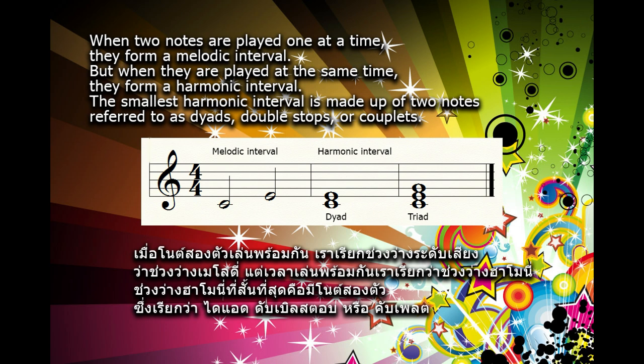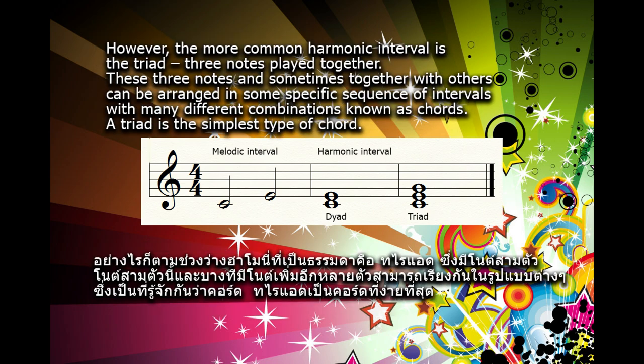The smallest harmonic interval is made up of two notes referred to as dyads, double stops, or couplets. However, the more common harmonic interval is the triad — three notes played together. These three notes, and sometimes together with others, can be arranged in some specific sequence of intervals with many different combinations known as chords.